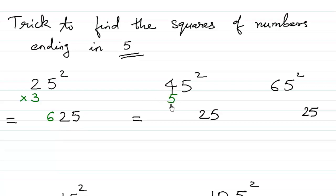What comes after 4? 5 comes after 4. And what is 4 times 5? 4 times 5 is 20. So the square of 45 is 2025.